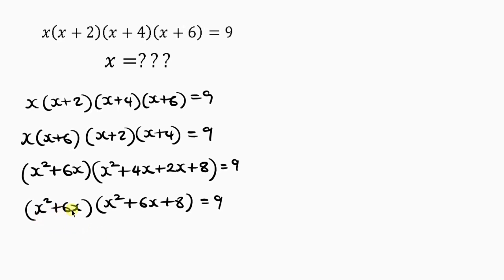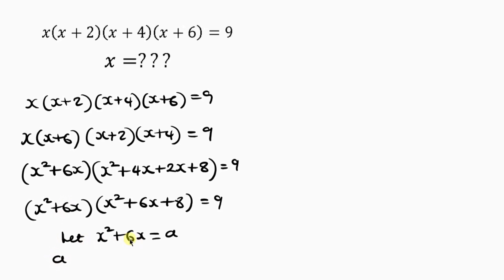Notice something: the first bracket is s²+6s and the second bracket also contains s²+6s. So we can let s²+6s equal to a. Wherever I see s²+6s I'll write a. So this becomes a(a+8) = 9.